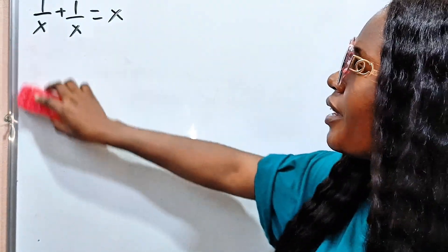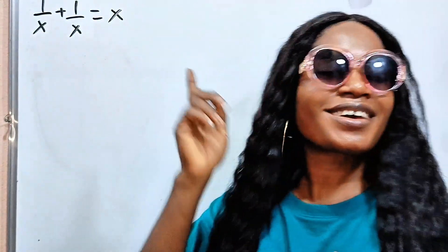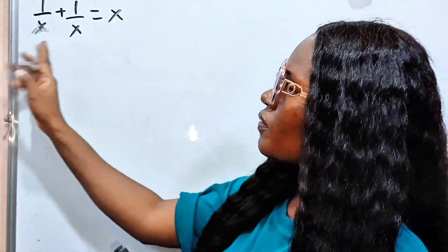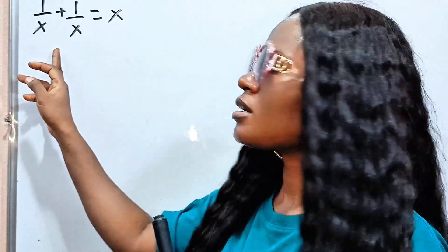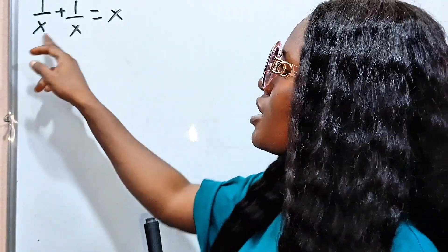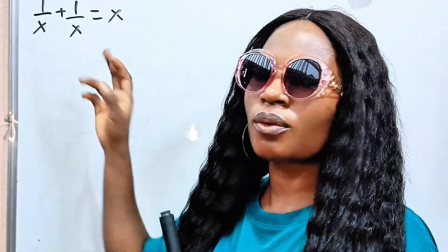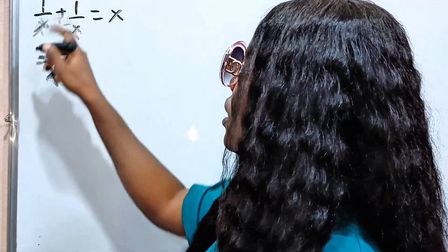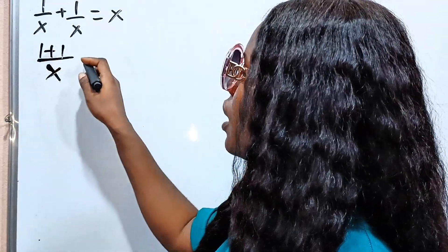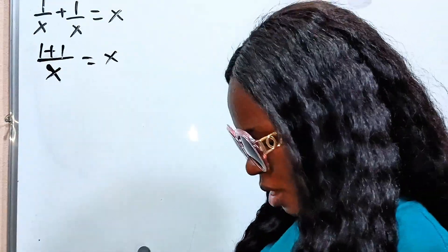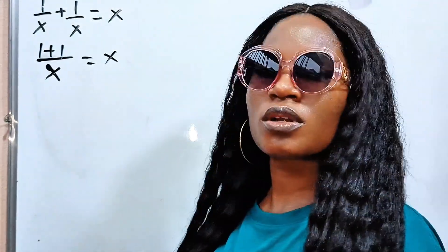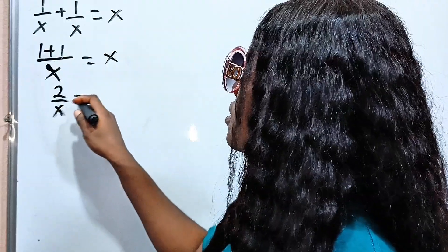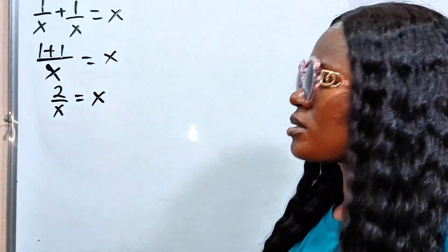Welcome back to my channel. Let us get straight to the points. First of all, let's solve this left-hand side. The LCM is x. Since they share the same denominator, we pick one of them and copy the numerator. So 1 plus 1 is 2, giving us 2 over x is equal to x.